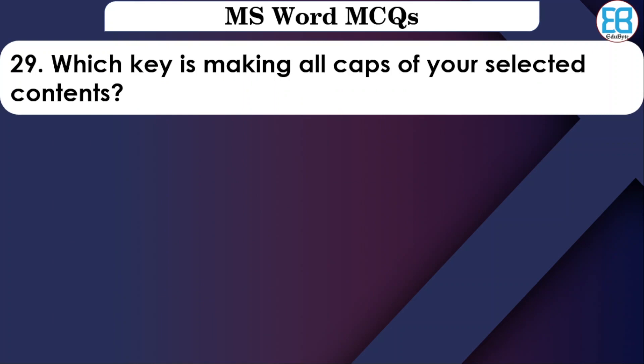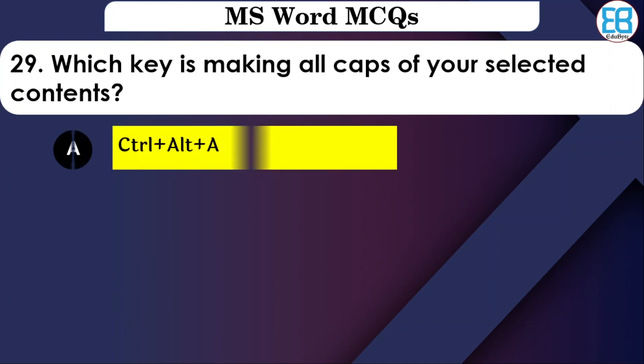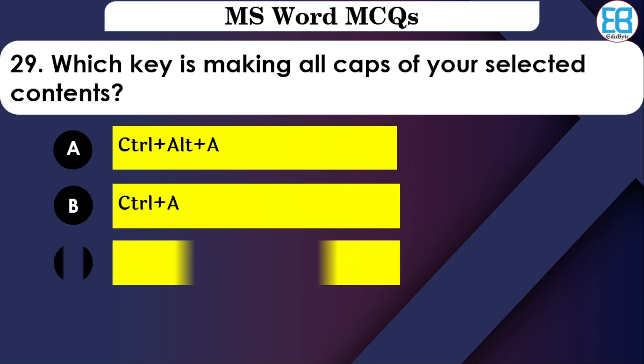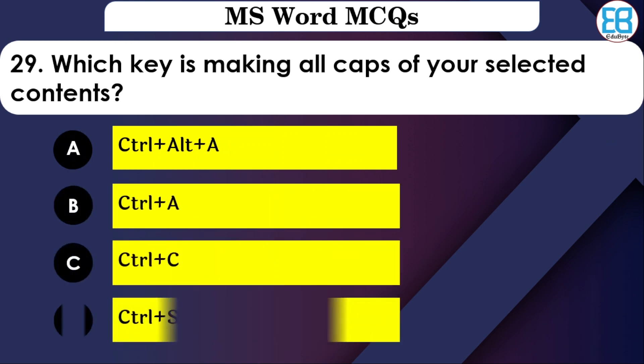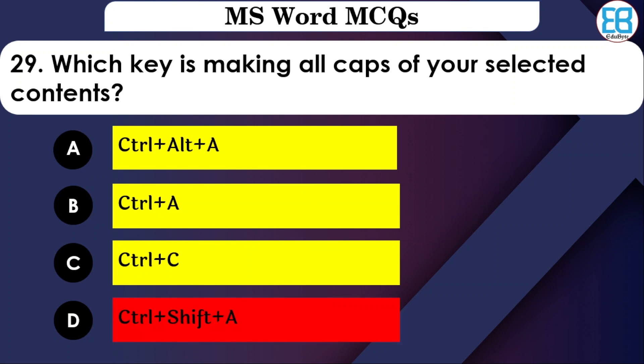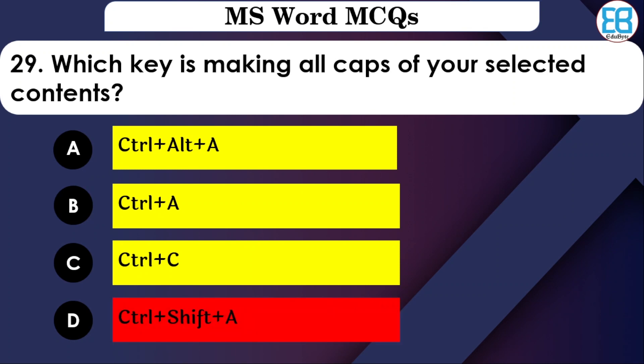What shortcut makes selected text All Caps in MS Word? The options are: Ctrl+I, Ctrl+A, Ctrl+C, or Ctrl+Shift+A. The correct option is Ctrl+Shift+A — this converts selected text to all capital letters.